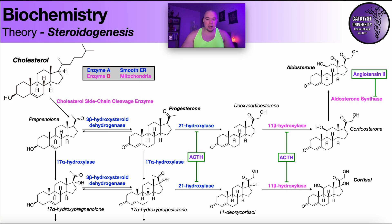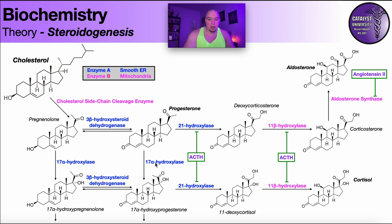In the previous video we discussed the biosynthesis of aldosterone, our primary mineralocorticoid, and cortisol, the primary glucocorticoid in humans. Recall that 17-alpha-hydroxylase is a really important enzyme because it determines ultimately whether we're going to be making aldosterone or at the very least cortisol.